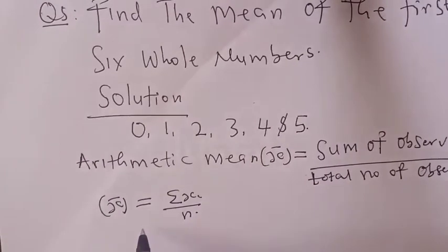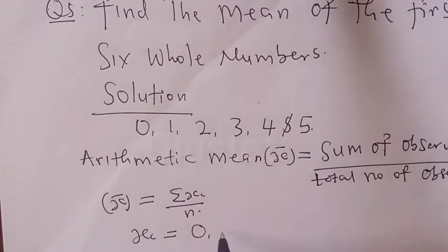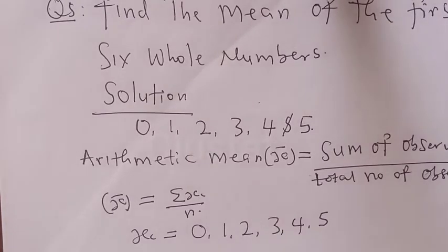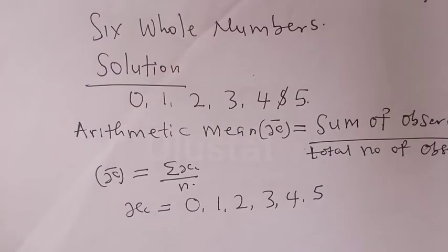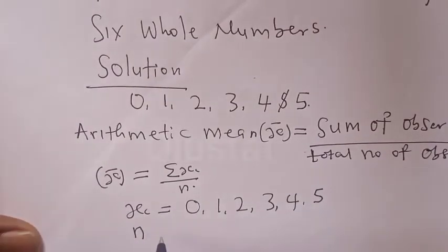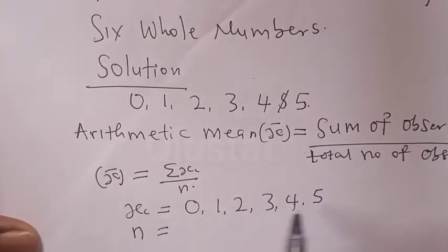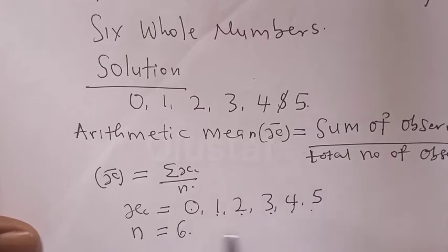Then our xi values are 0, 1, 2, 3, 4, 5. That is the first six whole numbers. Remember we are asked to find the mean of the first six whole numbers. Now n is equal to 6, that is the number of observations.